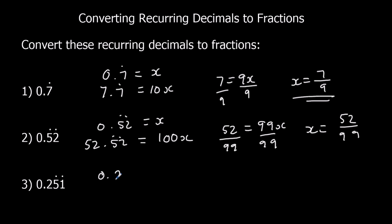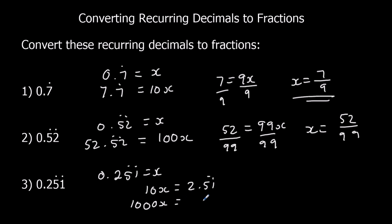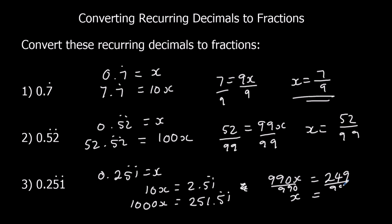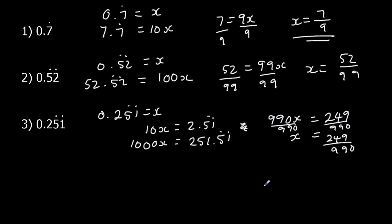Thirdly, 0.251 recurring — only the 5 and 1 are recurring. So we've got 10x, which is 2.515151, and 1000x, which is 251.515151. A thousand take away ten is 990. The recurring parts cancel, so 251 take away 2 is 249. Divide both sides by 990: x equals 249 over 990. Both in the three times table, so that simplifies to 83 over 330.